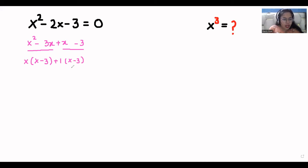If I take x minus 3 common from both the brackets, so x minus 3 from first, x, and here plus 1. So now we have two roots of this equation: either x minus 3 or x plus 1.